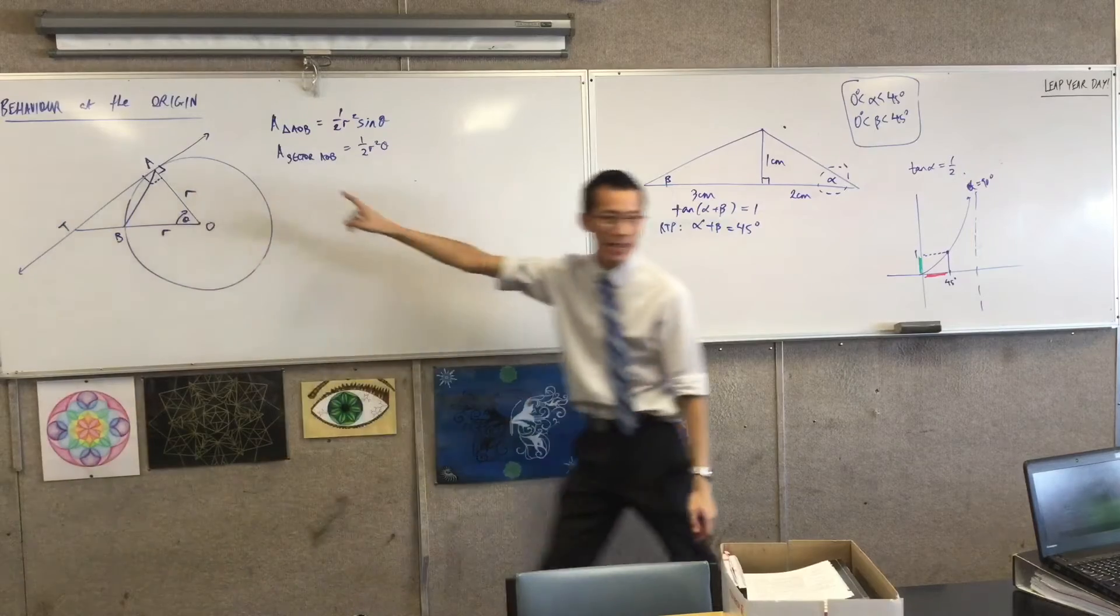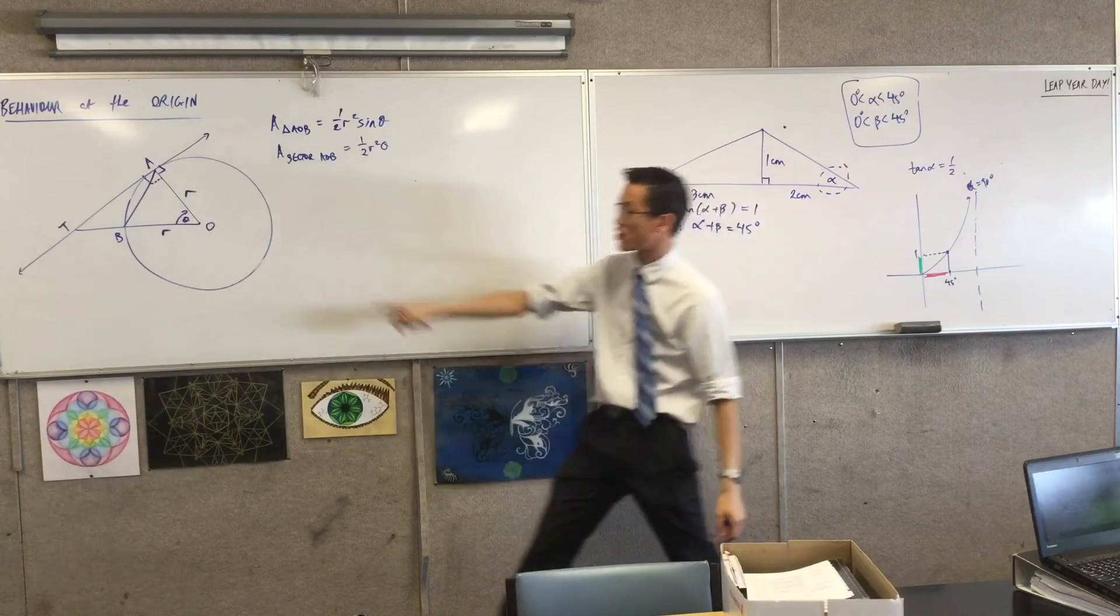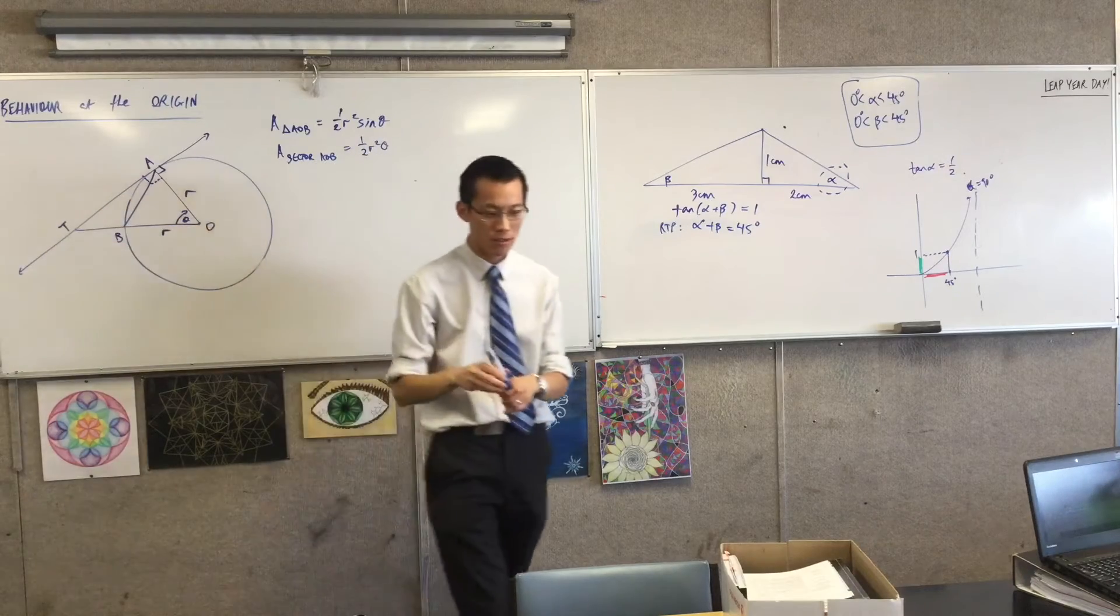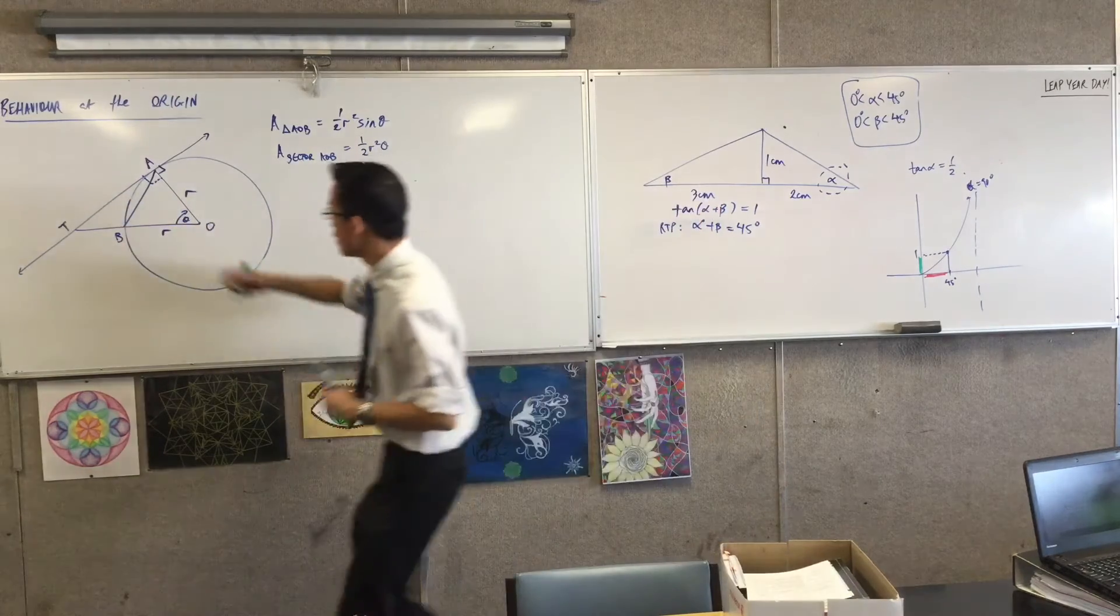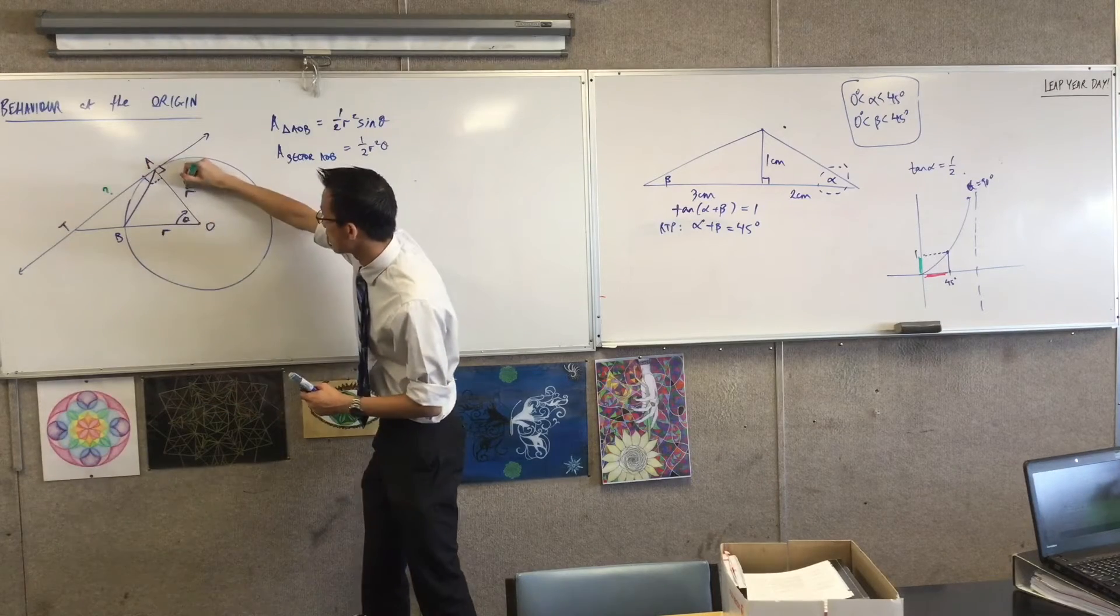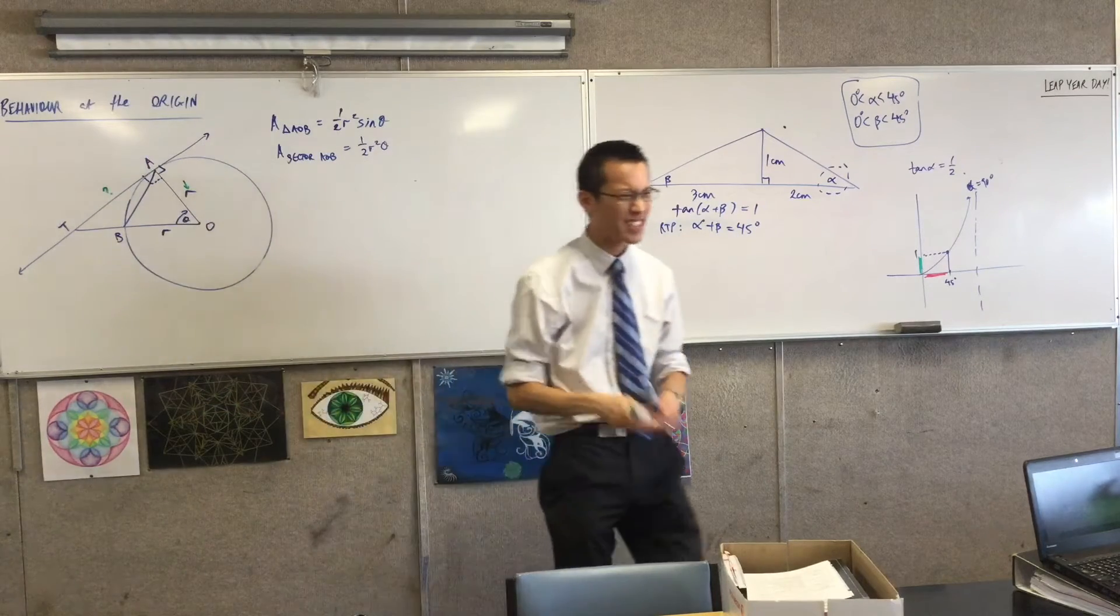So what's AOT? I know a side, I know an angle, and this is an unknown. Now, what are you going to do? Yeah, good. You've got an angle, you've got the opposite side, and you've got the adjacent side. So that sounds like tan to me.